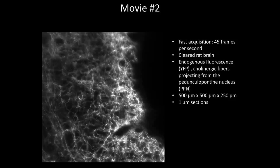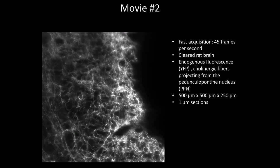I'd like to show you a movie demonstrating 45 frames per second acquisition of a cleared rat brain with endogenous fluorescence, where you can see collagenous fibers. You can see the fine neuronal processes we were able to record. In that acquisition, four tiles were stitched using TeraStitcher.